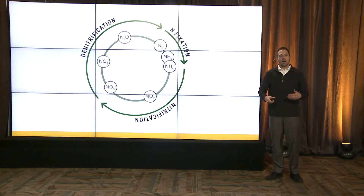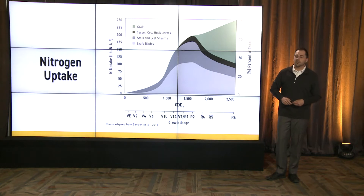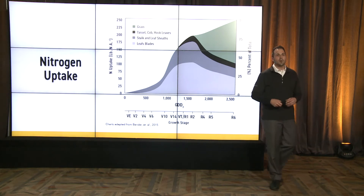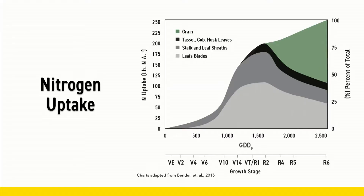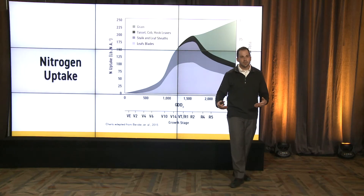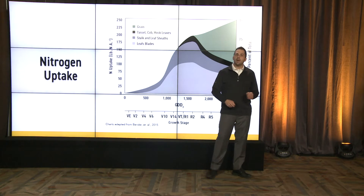So how do we time our application of nitrogen with the form of nitrogen to that maximum uptake? First, we have to understand what that nitrogen uptake curve looks like. We have V5 to VT as when maximum uptake takes place.